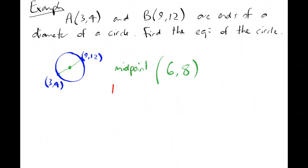We want the length of the radius. So what we're going to do is we're going to go from the 6, 8 up to the 9, 12 or from the 6, 8 down to the 3, 4. It doesn't really matter how you do it. I'm going to look at 3, 4 and go up to that midpoint of 6, 8.